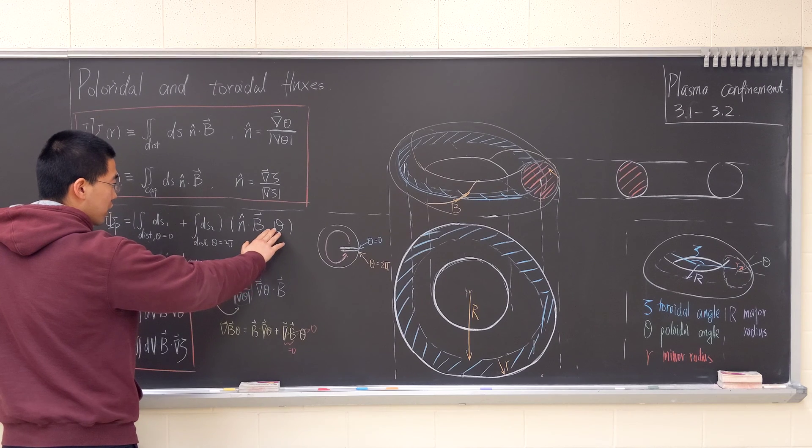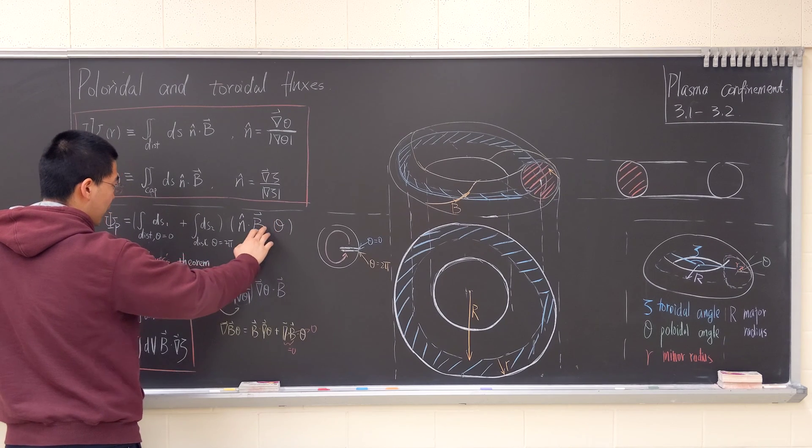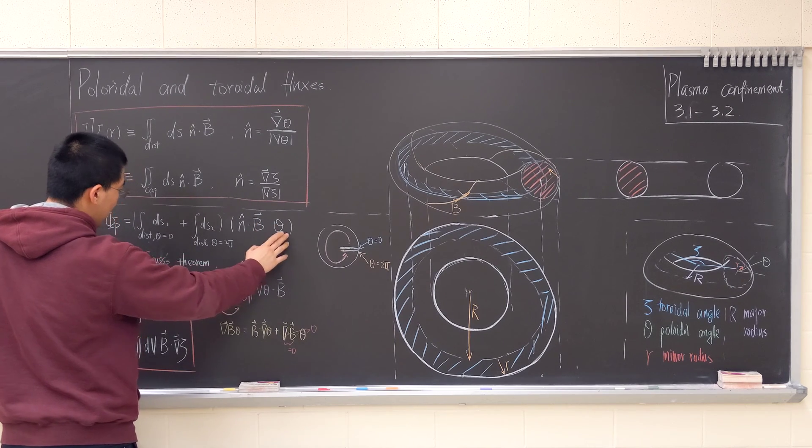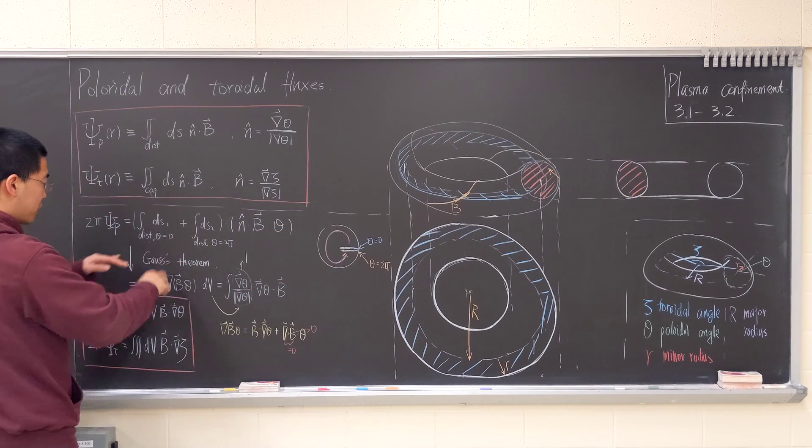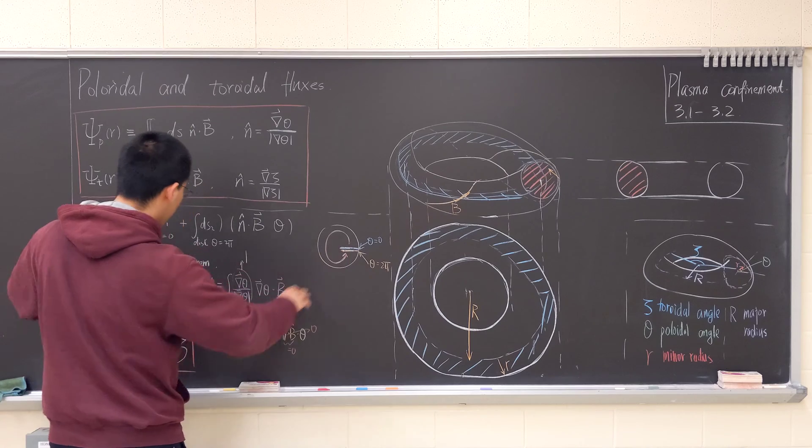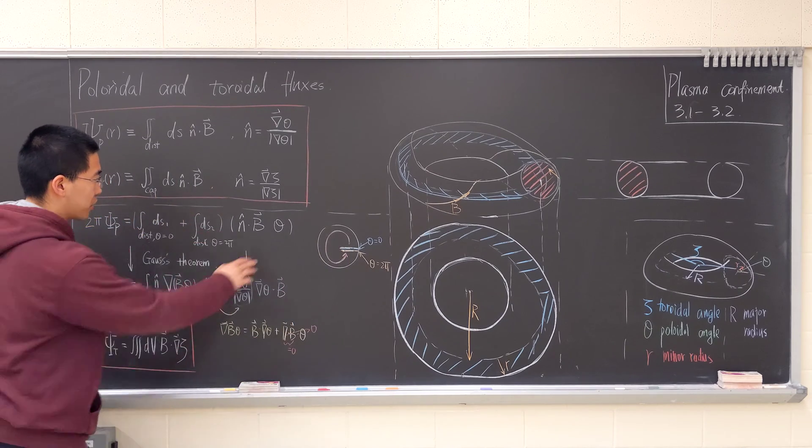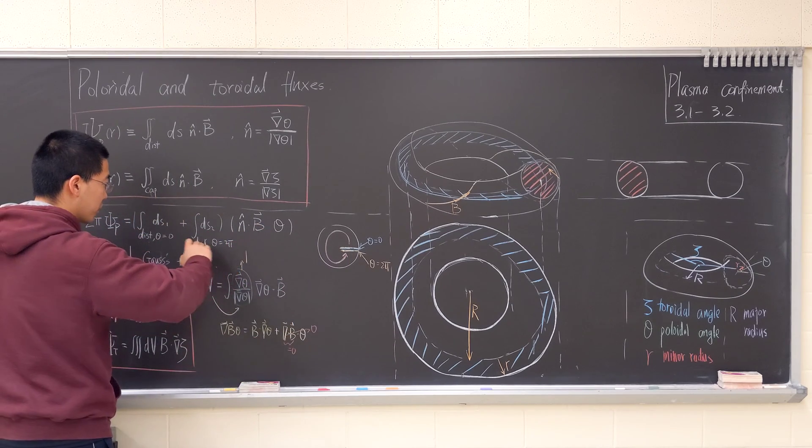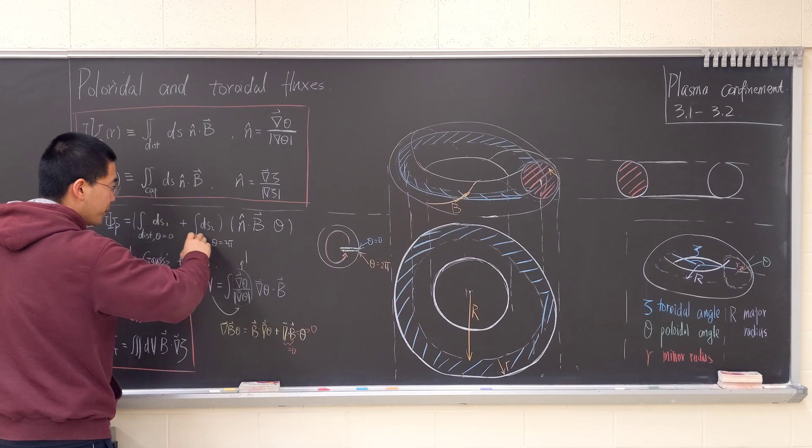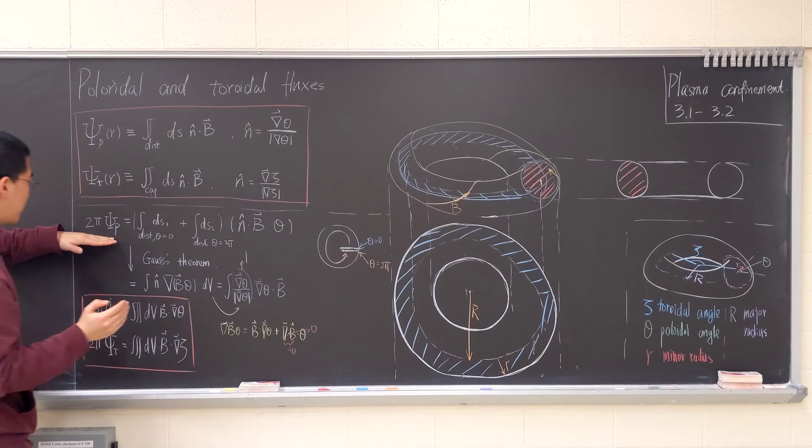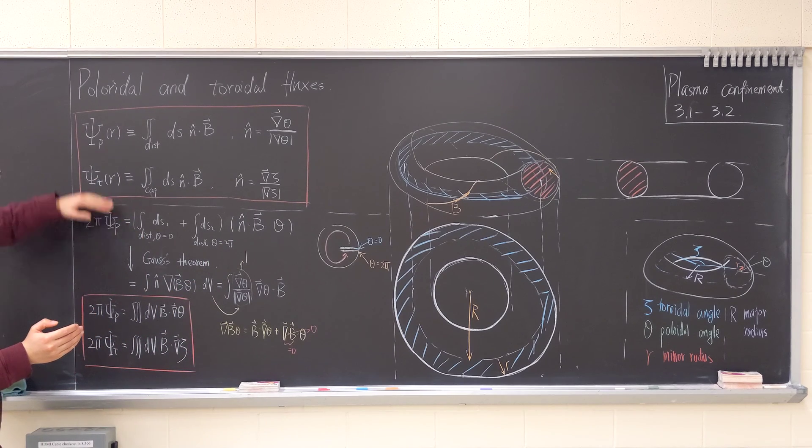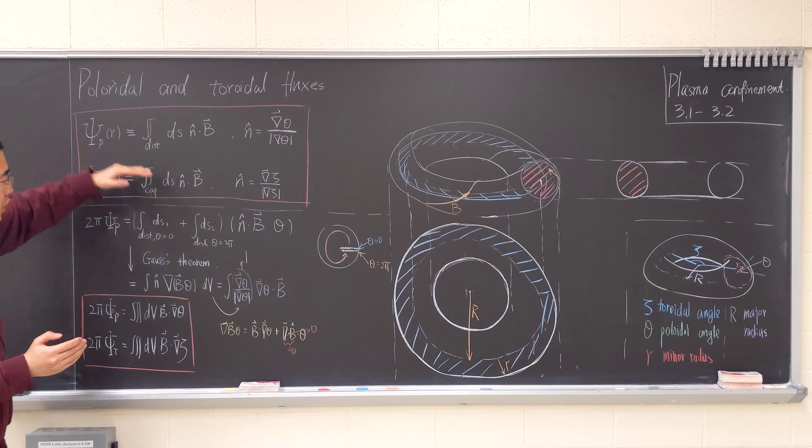If we construct this, since this doesn't have, doesn't get into the surface integral, then this will be zero. Because the disk, when setting goes zero, then the disk will become zero. Because anything multiplied by zero is zero. And then this is two pi's, and basically it's this, equals to two pi psi, psi p, which is the definition, pretty much the definition.